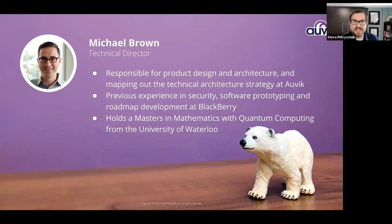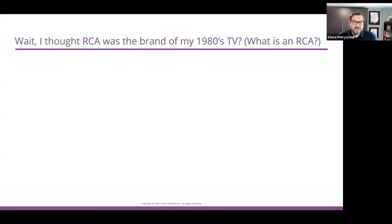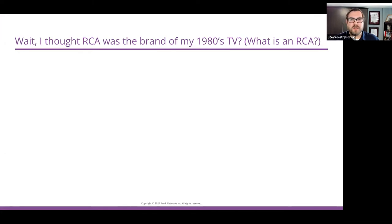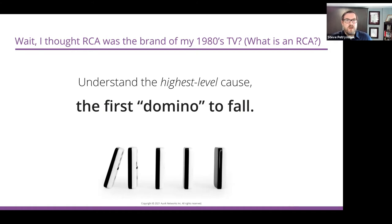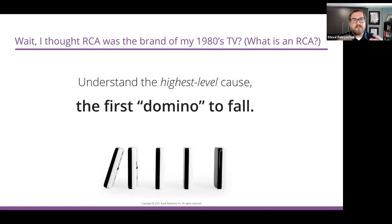So let's dive in. I'm going to use the word RCA a lot. I'm a father so I'll start with a dad joke — I thought RCA was that brand of TV I used to have in the 1980s. But what we're going to be talking about specifically is root cause analysis. With a root cause analysis, what we're trying to understand is that highest-level cause of an issue — that first domino to fall. The symptom or what we end up seeing is the last domino falling over. We want to back that up as far as we can to understand what was the first thing that happened, that led to that end result or incident.